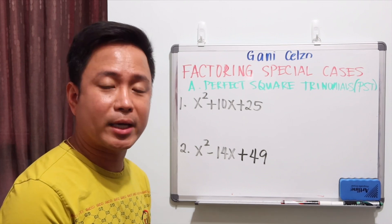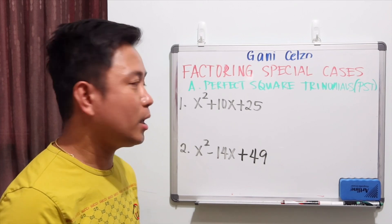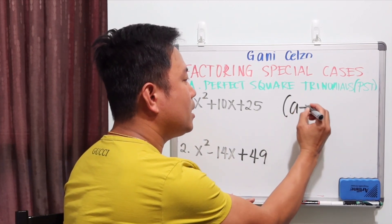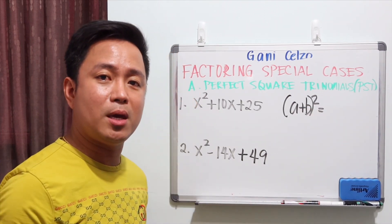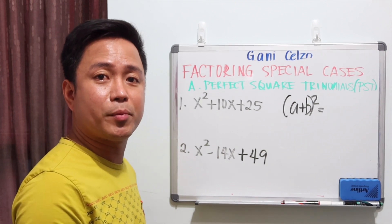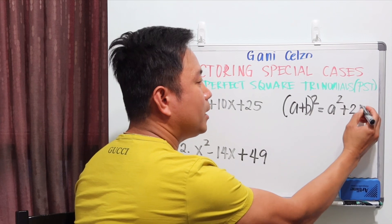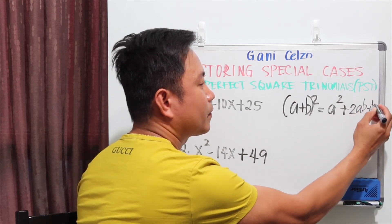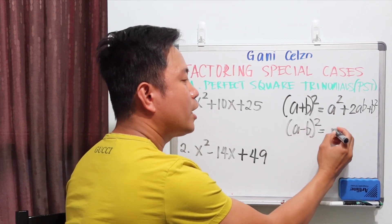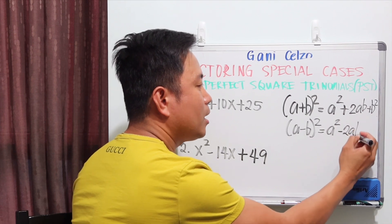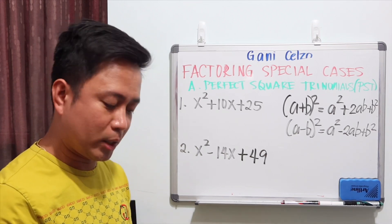Always remember that factoring is the inverse of multiplying polynomials. So if you have (a + b) to the second power, this means we need to do (a + b) multiplied by (a + b). Using the distributive property, we will get a² + 2ab + b². Also, if you have (a - b) to the second power, you should have a² - 2ab + b², as we learned in the previous lessons when squaring a binomial.